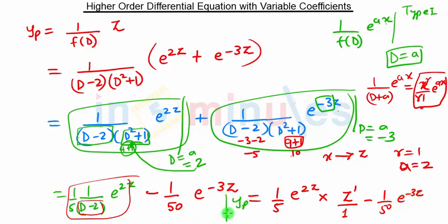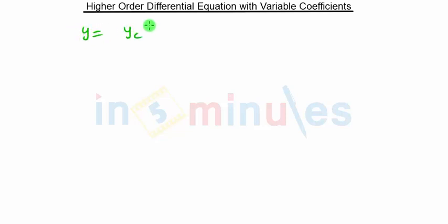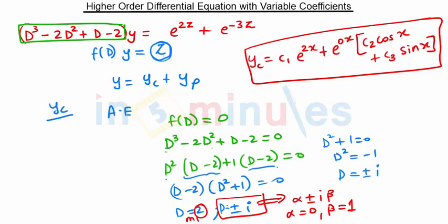So yp is z upon 5 into e raised to 2z, minus 1 upon 50 into e raised to minus 3z. For the final solution y equals yc plus yp. Note that in higher order differential equations with variable coefficients, we replace x by z everywhere, so yc should have e raised to 2z, not x.